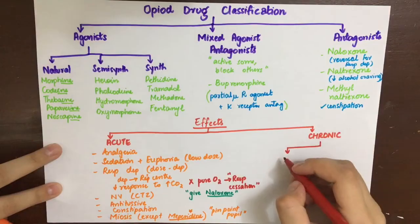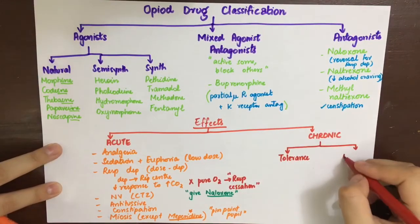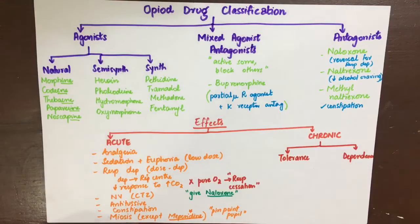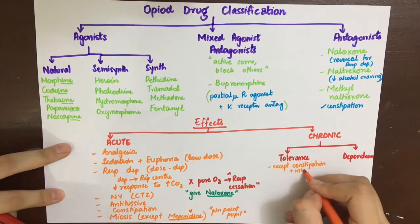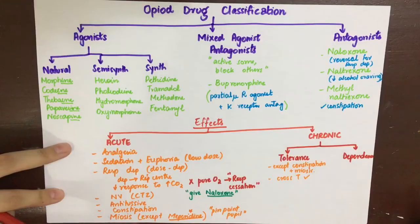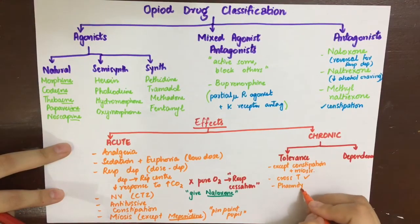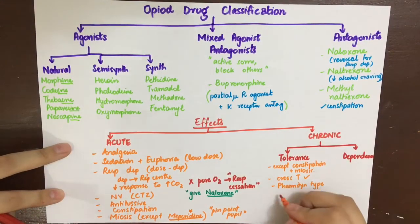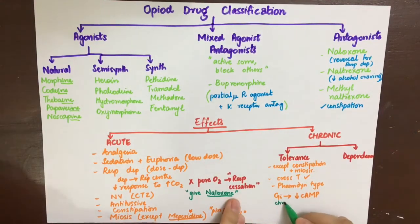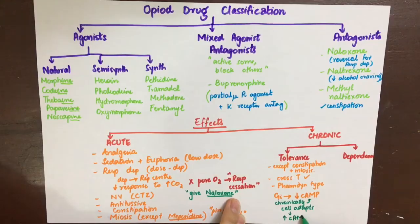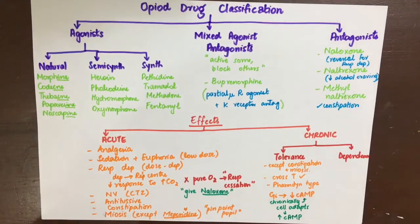The chronic effects include tolerance and dependence. Tolerance to pharmacological effects develops for most effects except constipation and miosis. Some cross-tolerance is also seen, and in cancer patients, opioid rotation — switching from one opioid to another — is practiced. This tolerance is of a pharmacodynamic type: when opioids inhibit Gi receptors long-term, decreased cyclic AMP occurs, but the cell adapts by increasing cyclic AMP through other pathways.